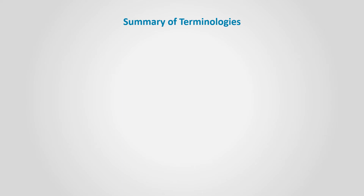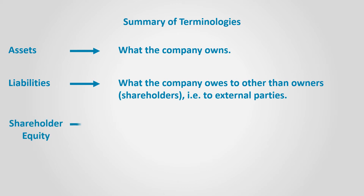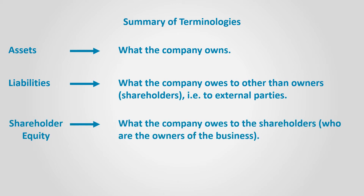Let's review a summary of terminology up till now. Assets are resources that the company owns and have a future economic benefit — this simply means that they have value. Liabilities are all what the business owes to entities other than the owners. Shareholders' equity is what the business owes to the shareholders — what remains in the assets after paying all liabilities.